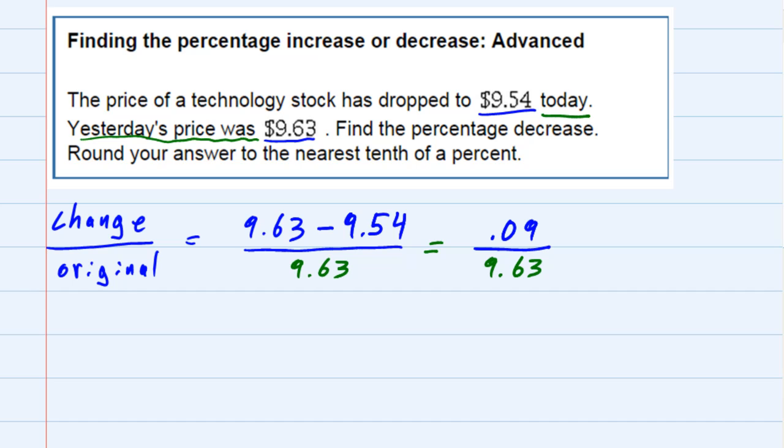if we use our calculator and put that in as $0.09 divided by $9.63, it gives us kind of a long decimal, 0.009346. Maybe some other digits out there.